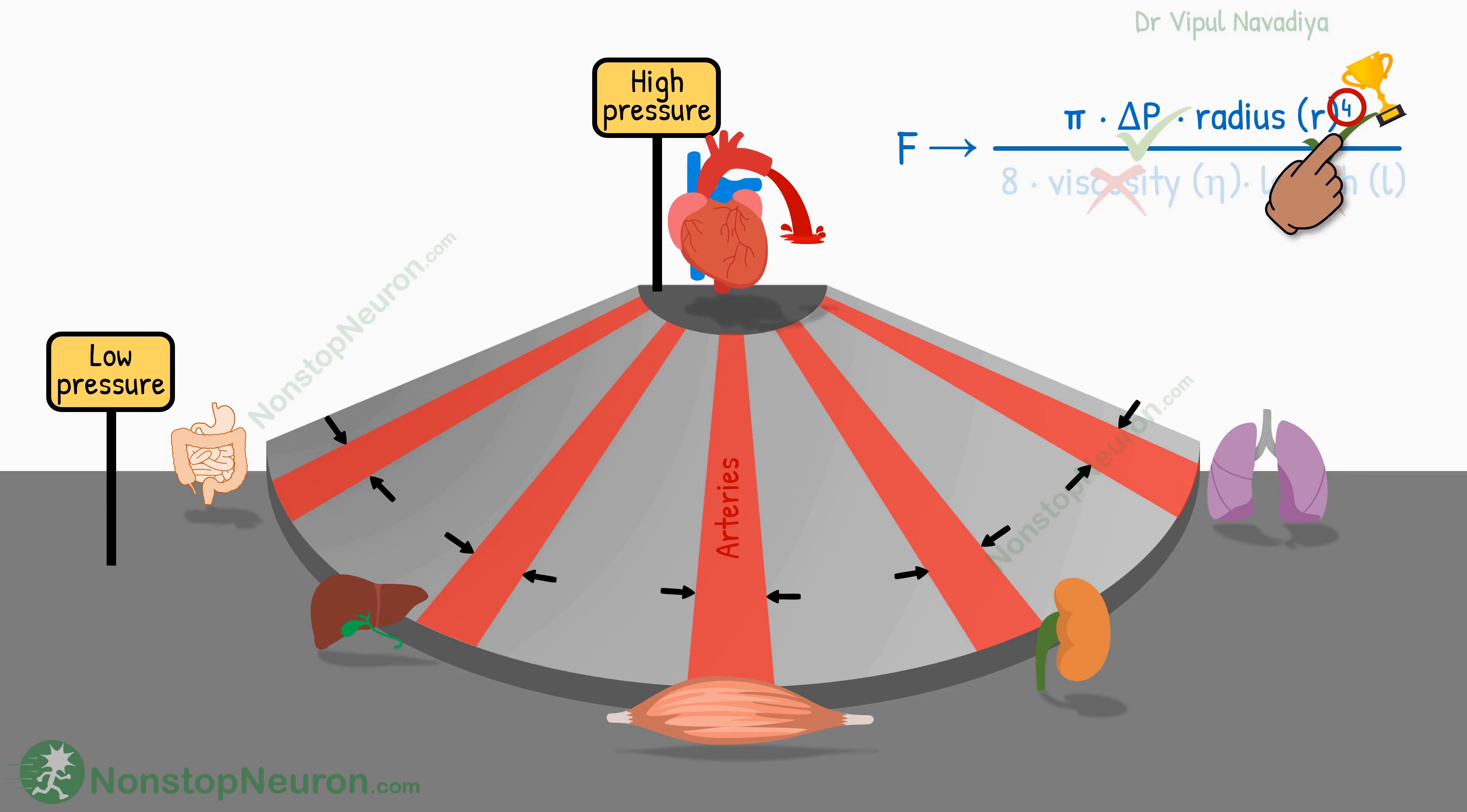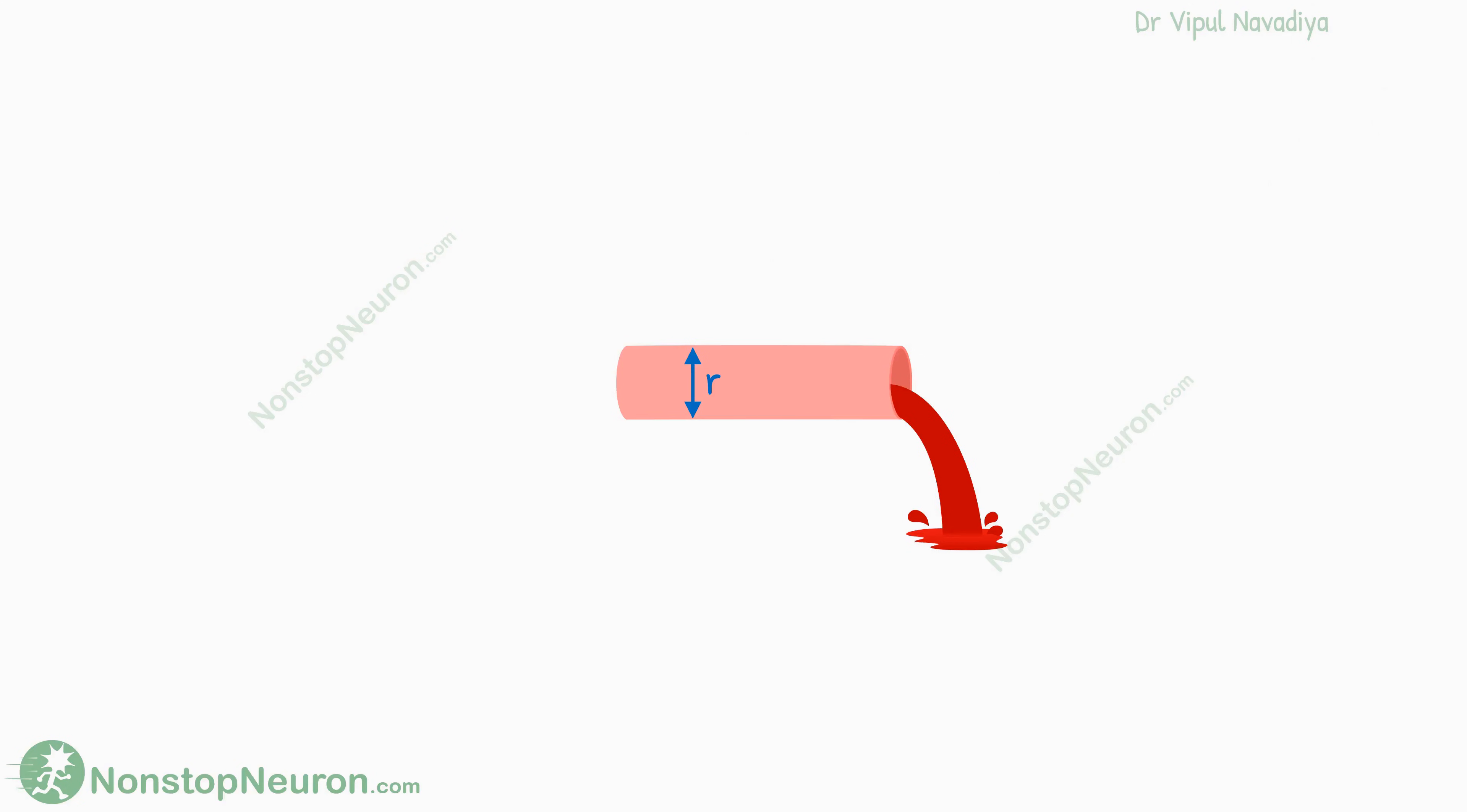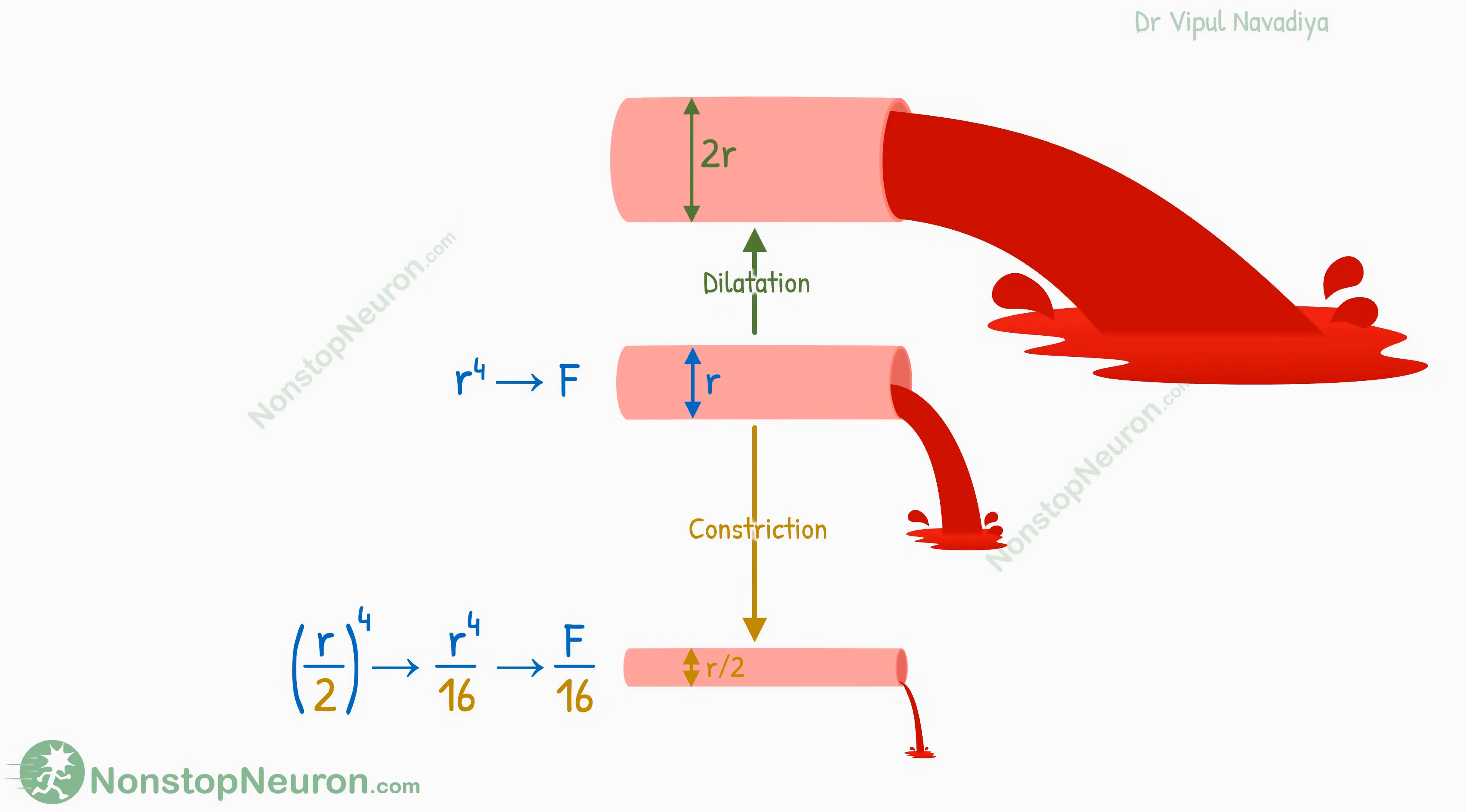First, let's see the importance of the fourth power. As blood flow is proportional to the radius to the fourth power, its impact on blood flow is much more. By the very math, we can understand that if the blood vessels are constricted to half the radius, the blood flow decreases 16 times. And if they are dilated to double the radius, the flow increases 16 times.